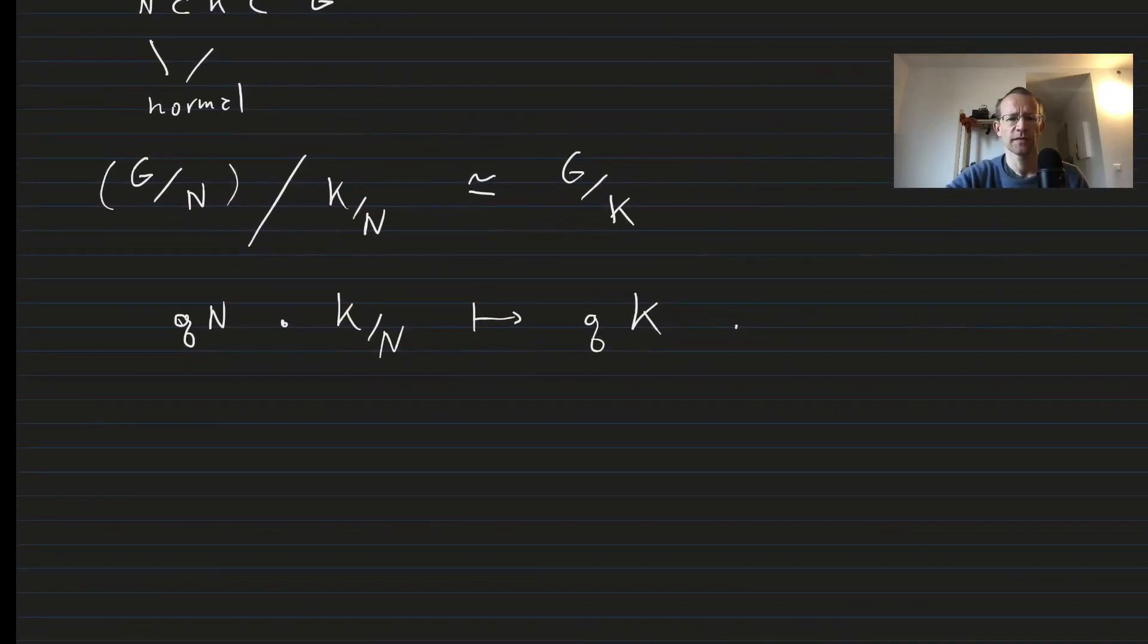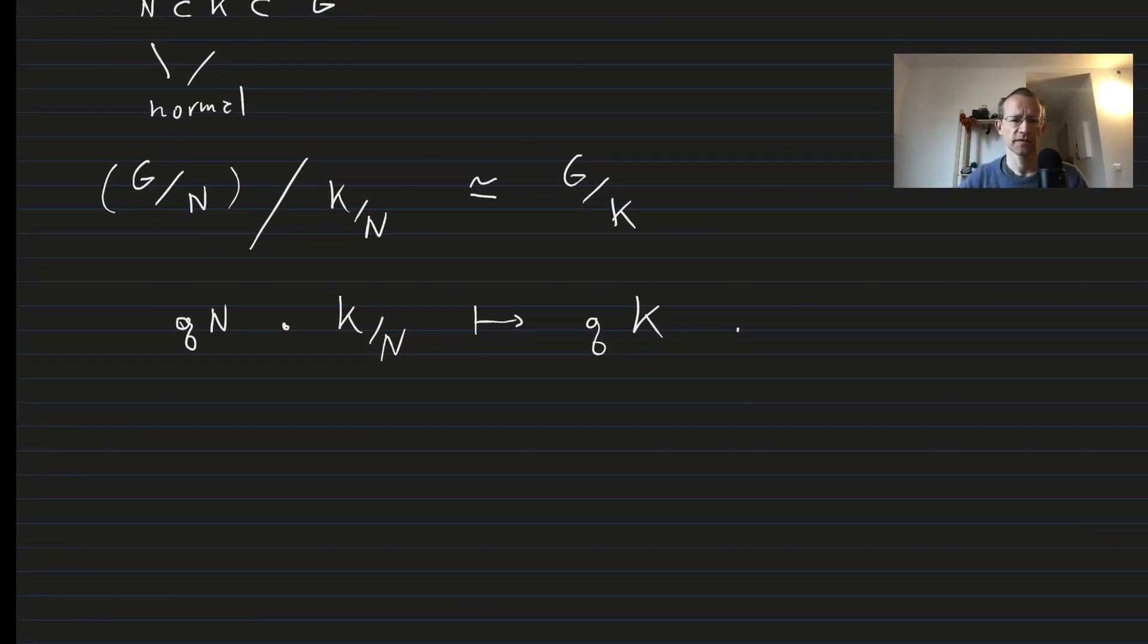The third isomorphism theorem is a consequence of the first isomorphism theorem, in particular of studying the following map. So we map from G over N into G over K. Remember that N is a subgroup of K.